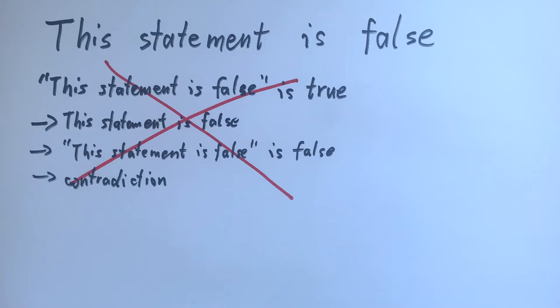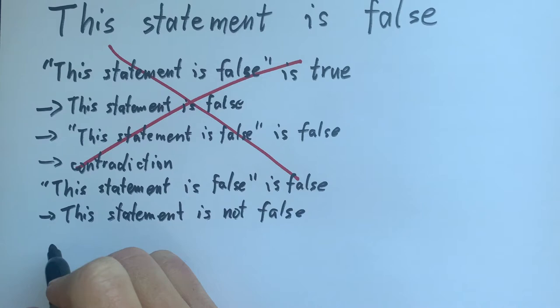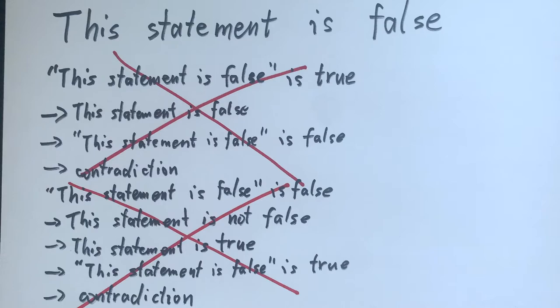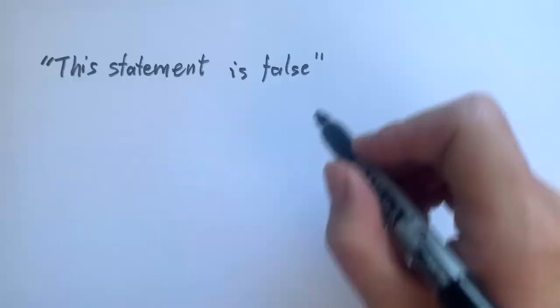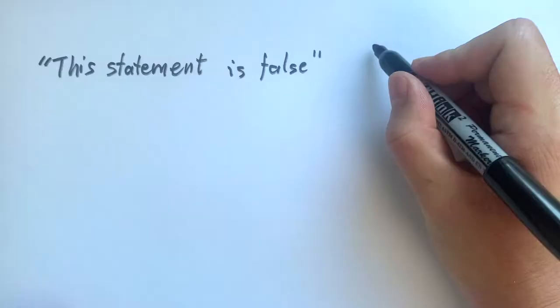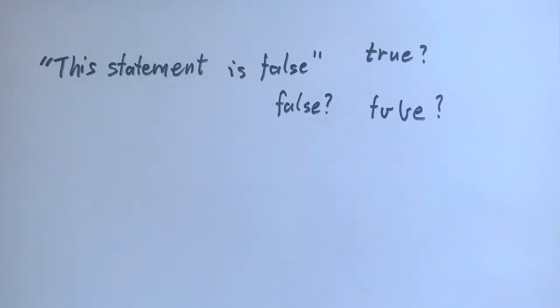That must mean it's false. But if this statement is false is false, that means the statement is true. And once again, it's both true and false. So the statement can't be true, but it can't be false either.